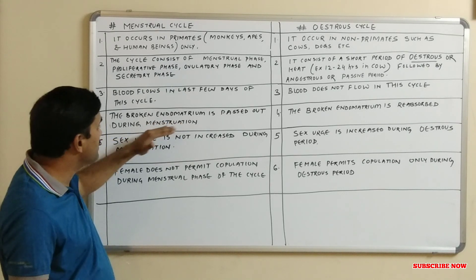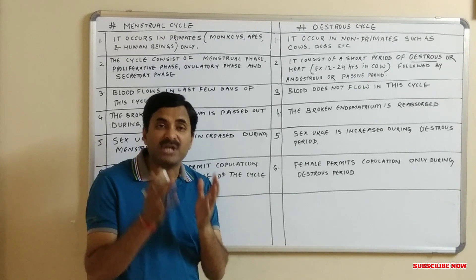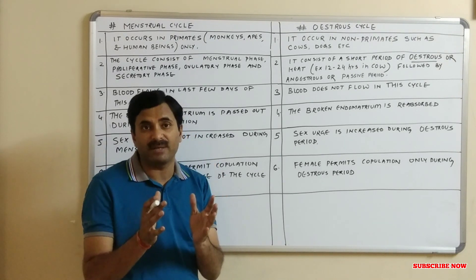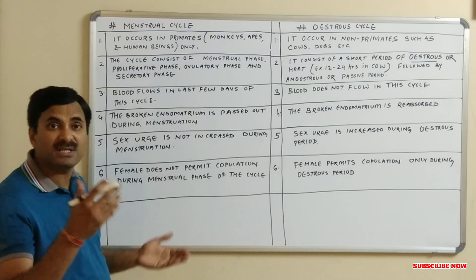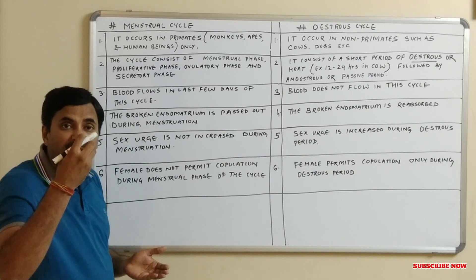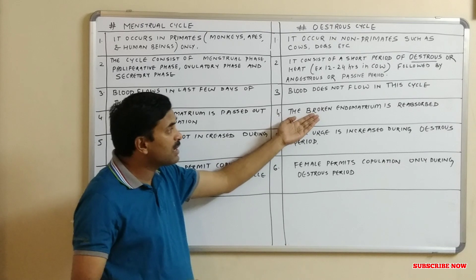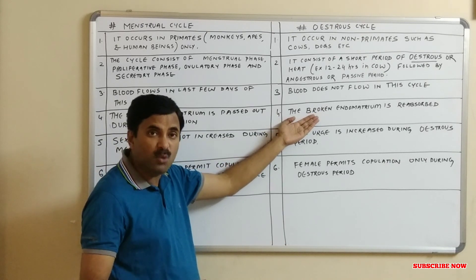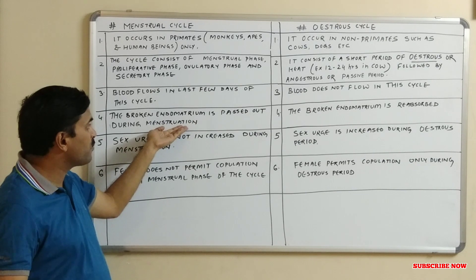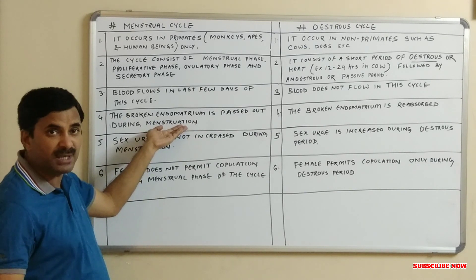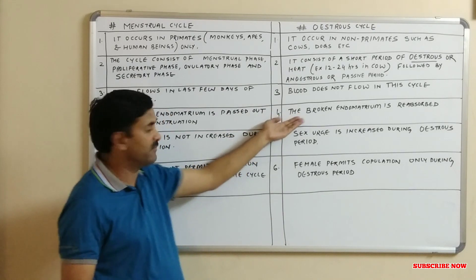The fourth point is that in the menstrual cycle, the broken endometrium is passed out during menstruation. Menstruation is a way to shed out the thickened endometrium. In the estrous cycle, however, the broken endometrium is not released through bleeding — instead, it is reabsorbed by the body itself.